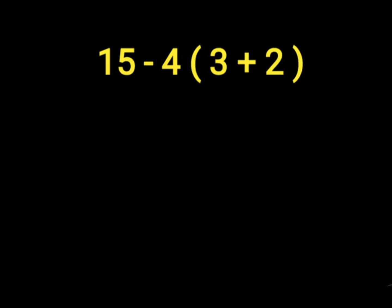15 minus 4, parenthesis 3 plus 2. 15 minus 4 will give us 11. Then we'll have 11, parenthesis 3 plus 2. 3 plus 2 will give us 5. Then we'll have 11 times 5. 11 times 5 will give us 55.